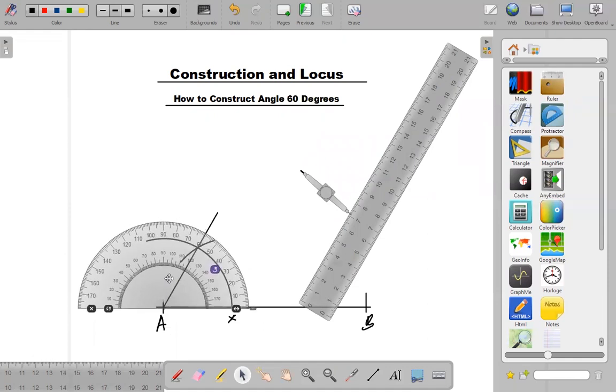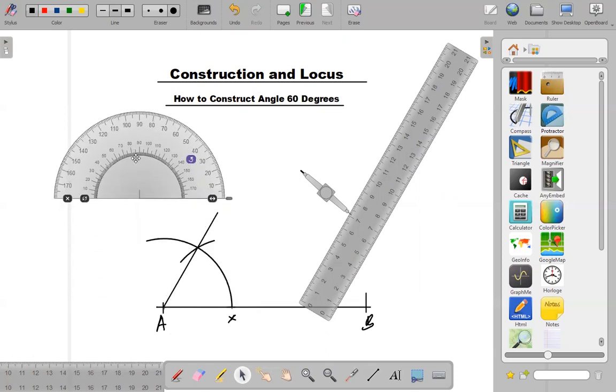So that is how to construct an angle of 60 degrees. Let me recap. First of all, draw a straight line, then put the reference point where you want to construct the 60 degrees. With the steel point of the compass on that reference point, place the steel point here, then you make an arc.